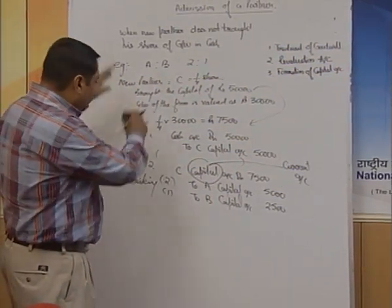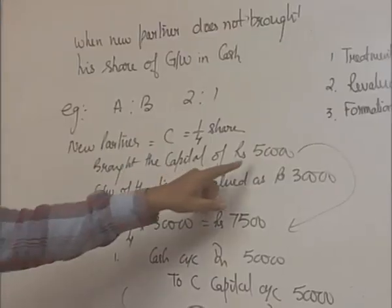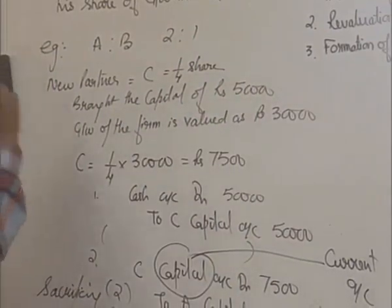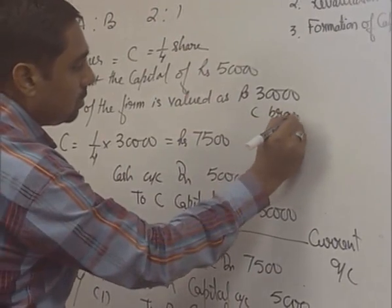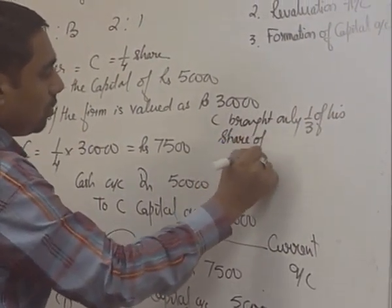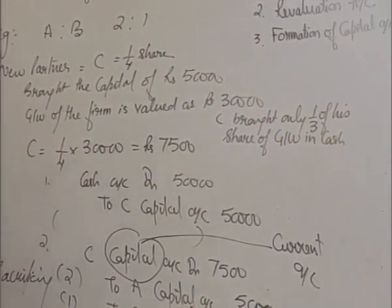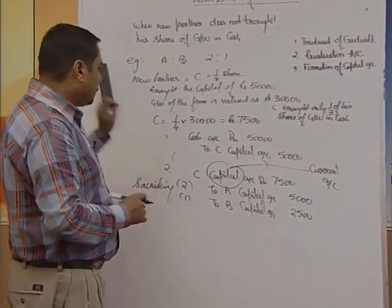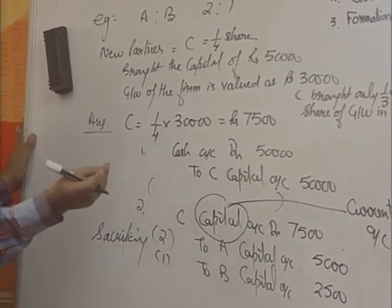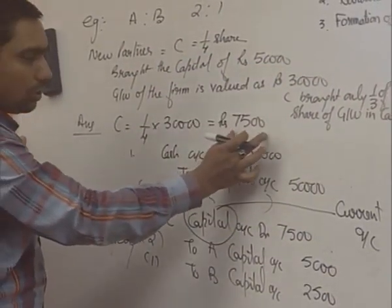Now I will explain another case. Keeping the same question in mind — A and B are partners in ratio 2:1, new partner C is admitted for 1/4 share and brings capital of 50,000, goodwill of the firm is valued at 30,000 — I add one more condition: C brings only one-third of his share of goodwill in cash. First, find the actual amount to be brought by C. C's share of goodwill is 1/4 of 30,000, which is 7,500.